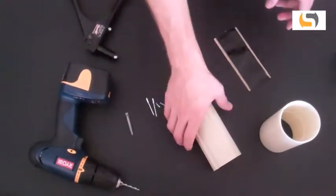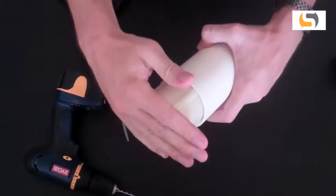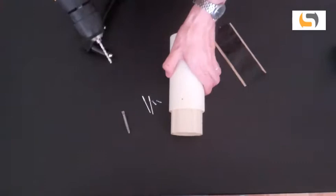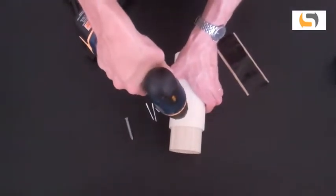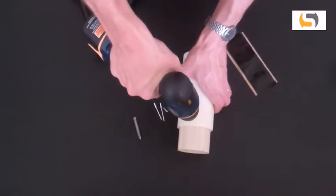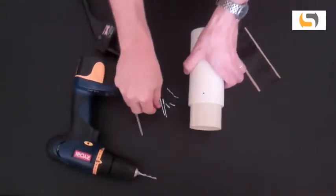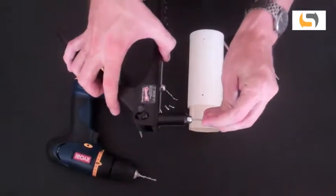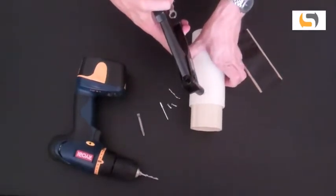To install using rivets, simply insert the casing into the coupling. Use a hand drill to make a hole in the casing through the guide holes present in the coupling. Insert a 1/8th inch rivet into the rivet gun and pop a rivet into the hole.